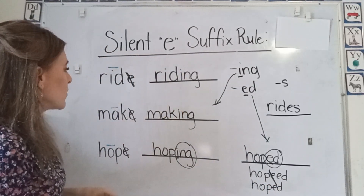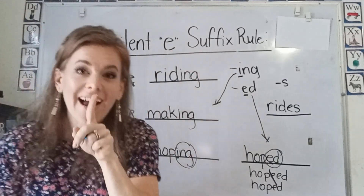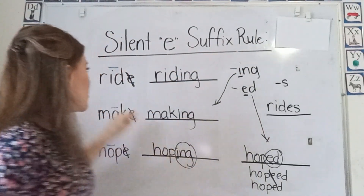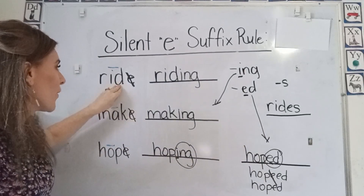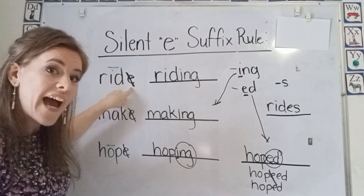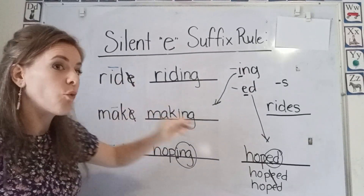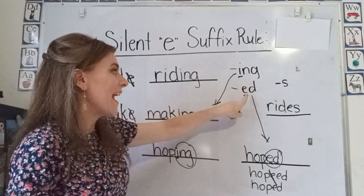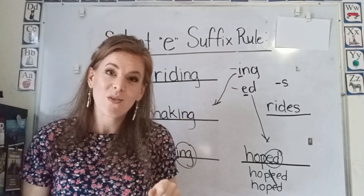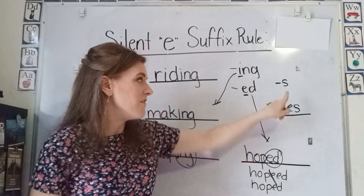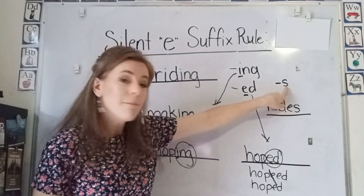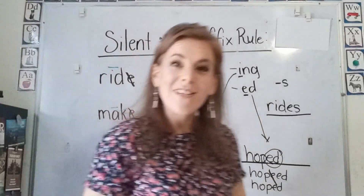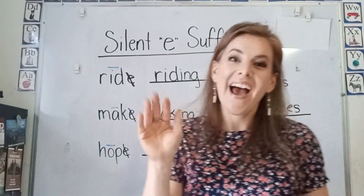Alright students, so this is our silent e suffix rule. When you have a word with a silent e at the end, you drop the e when you add a suffix that begins with a vowel. If it is not beginning with a vowel, you just add it to your word. Alright students, I will see you next time. Bye!